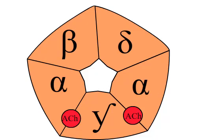The extracellular portion of the receptor contains two acetylcholine binding sites. They are located at the interface between the alpha and the adjoining subunits.